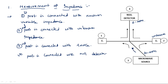The power enters from port 3 and after reaching the junction, it will go into Z1 as well as Z2 — towards port 1 and port 2 equally. That means the power is equally divided at this junction towards ports 1 and 2, but no power goes towards port 4 because port 3 and port 4 are isolated ports. Similarly, port 1 and port 2 are also isolated ports.